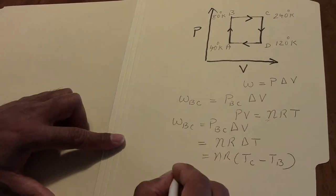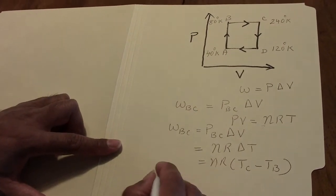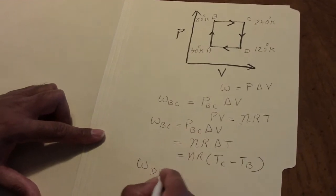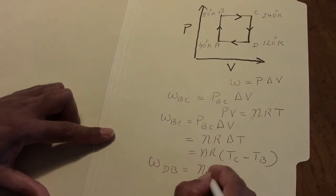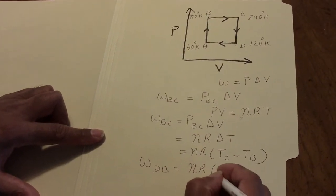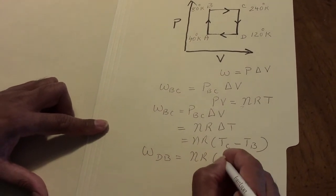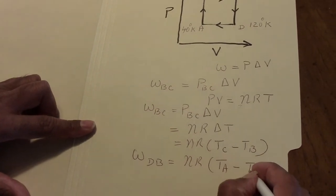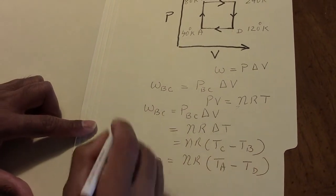we can write the work done along the path DB equal NR times (TA minus TD).